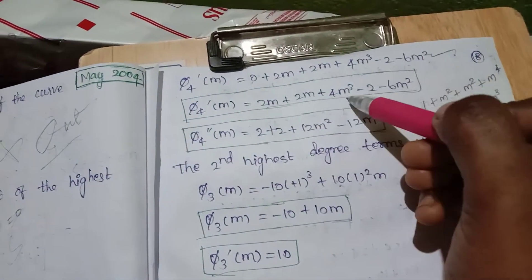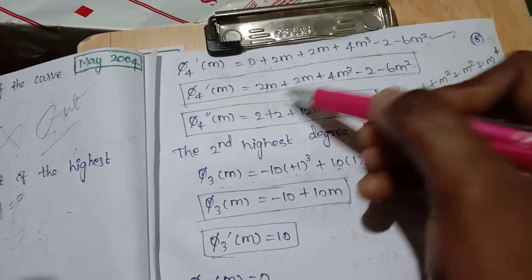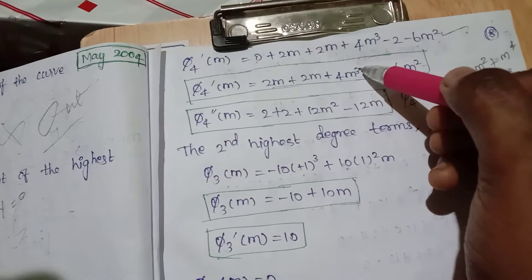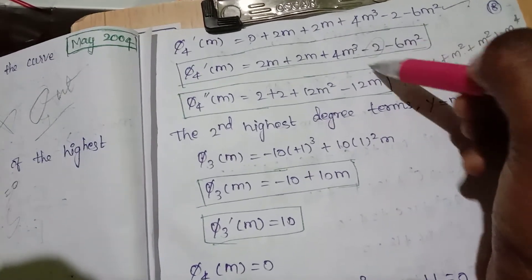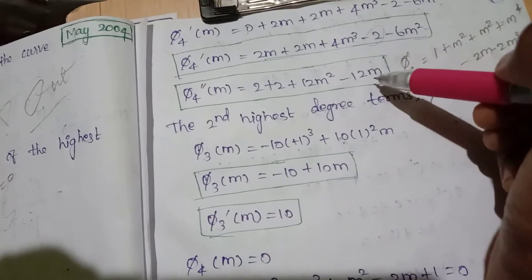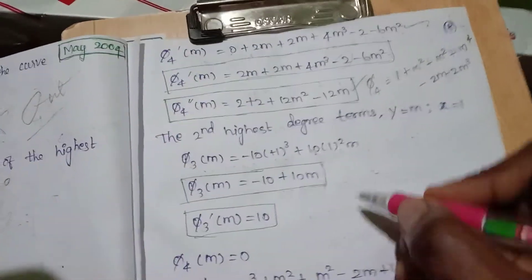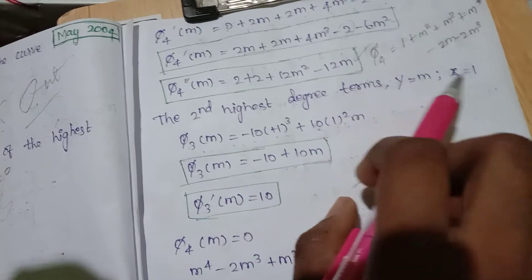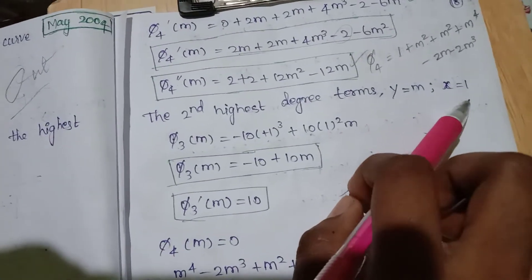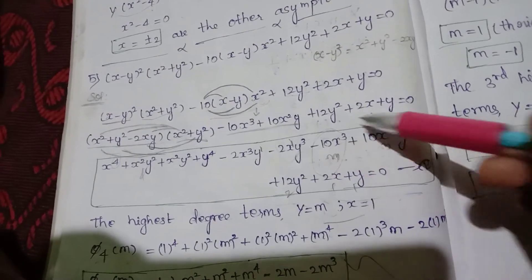So φ₄'(m) gives: 2m plus 4m³ minus 2 minus 6m² plus 4m³. Collecting terms: minus 2m³ plus 4m² and so on. Simplifying further: minus 2m³ minus 2m² minus 2m³.